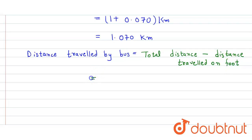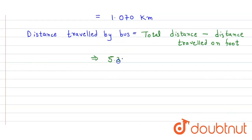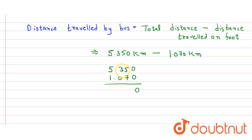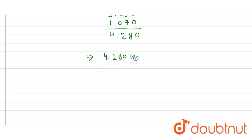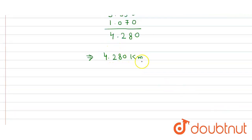The total distance is 5.350 km and the distance travelled on foot is 1.070 km. Subtracting: 5.350 minus 1.070 — we get 0 minus 0 is 0, then we take 1 carry, so 15 minus 7 equals 8, then 2, and 5 minus 1 is 4. So the answer is 4.280 km. The distance travelled by bus is 4.280 km.